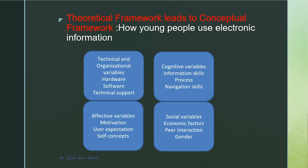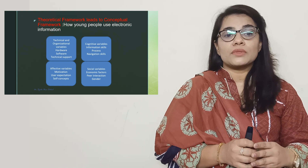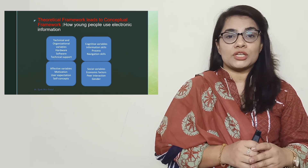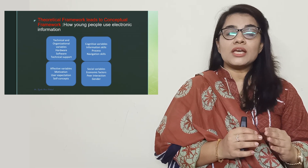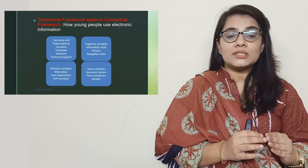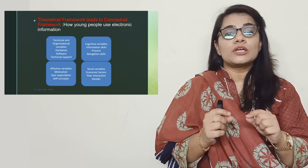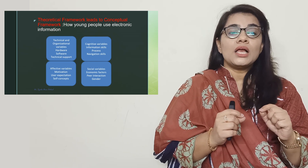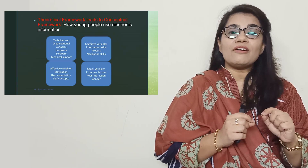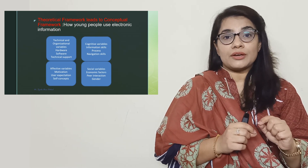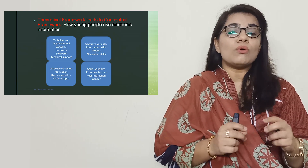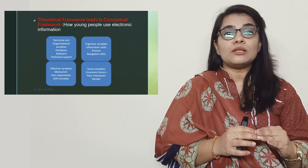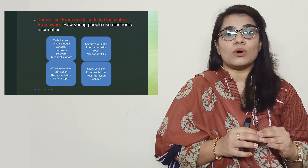Here I am giving you one example: how young people use electronic information. If this is your area of study, there are four types of theories that may apply. Some theories cover technical and organizational variables. Some theories cover cognitive aspects of this problem. Then some other theories cover affective variables. And some other theories focus on social variables. So if I am using all these four theories, this may help in developing my conceptual framework of the study.